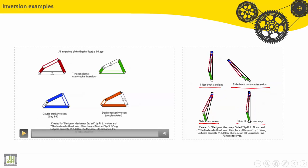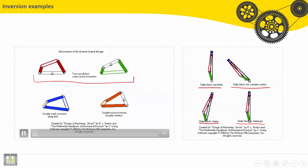Let's see here four bar mechanism inversions. Both here, two non-distinct. Crank rocker inversions. Crank, rocker inversions. You can see.